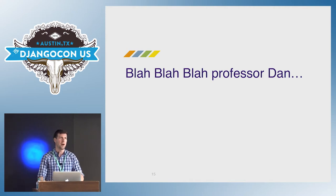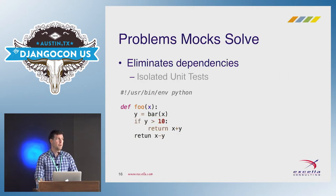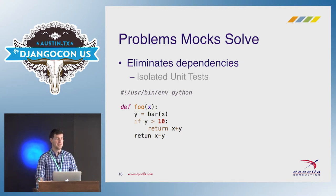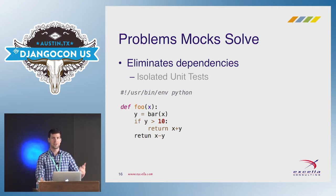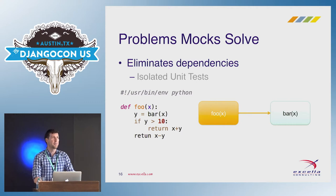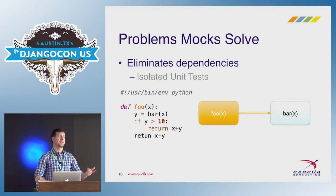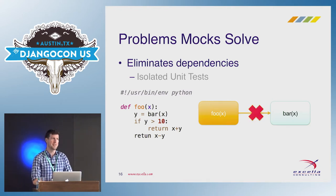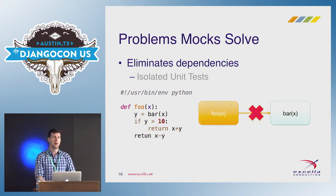Let's talk about the things that mocks help us solve. First problem: what happens if you have a dependency? Here I have a sample method, foo. Depending upon the value you get back from method bar is going to impact how foo behaves — foo depends on bar. The problem is that in order to understand how foo works, I need to also understand how bar works. If I could eliminate that dependency and gain certainty with bar, I could test more effectively. Mocking helps us with this.